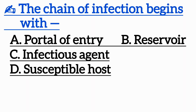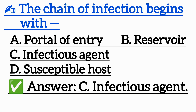Question 2: The chain of infection begins with — Option A: Portal of entry, Option B: Reservoir, Option C: Infectious agent, Option D: Susceptible host. Correct answer is Option C: Infectious agent.